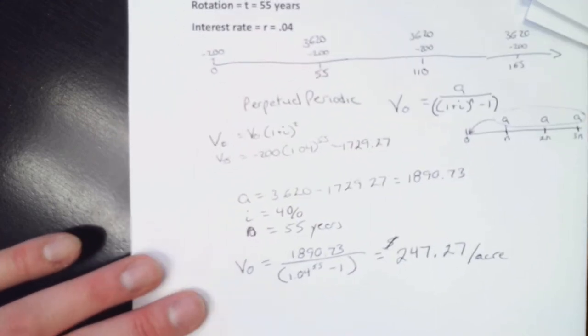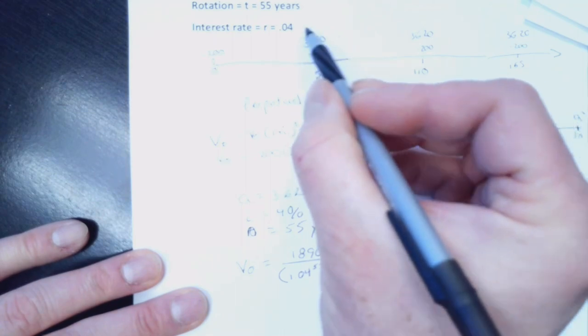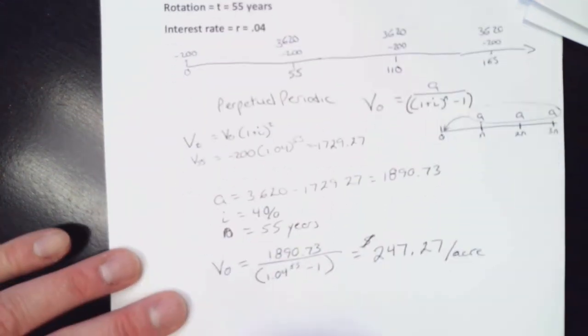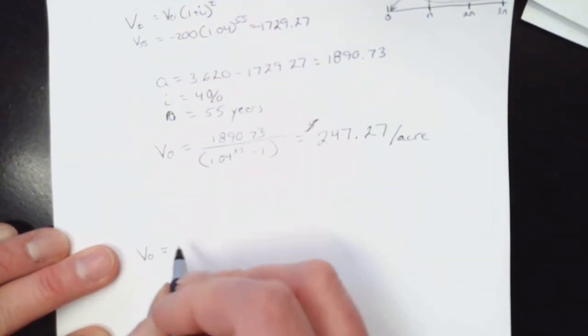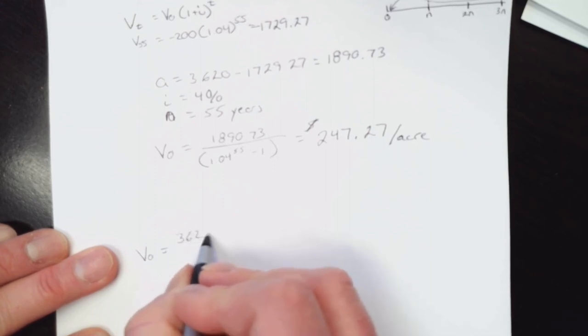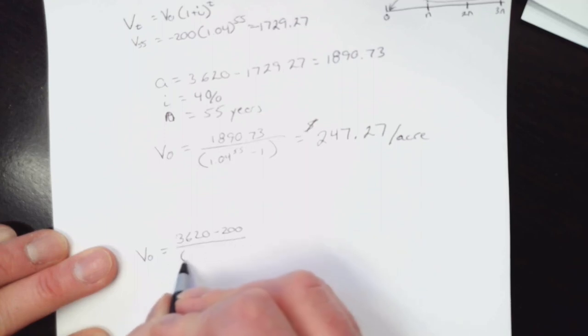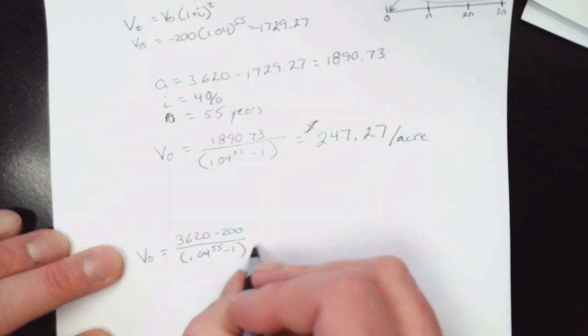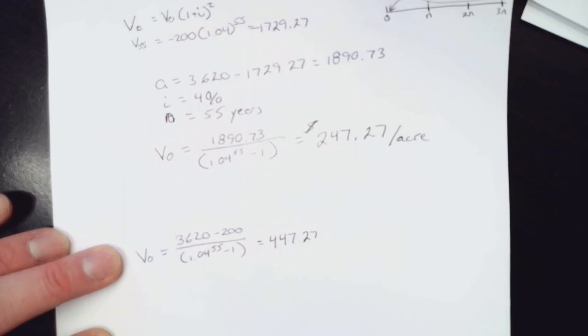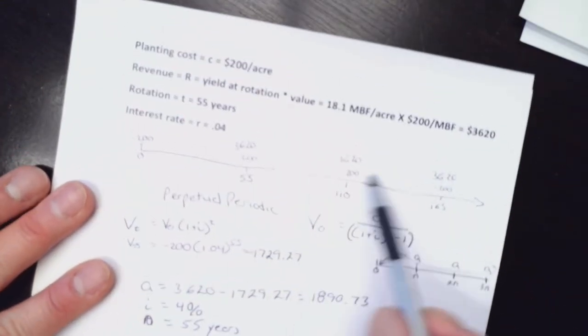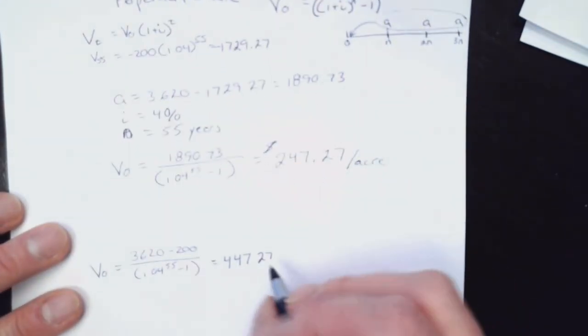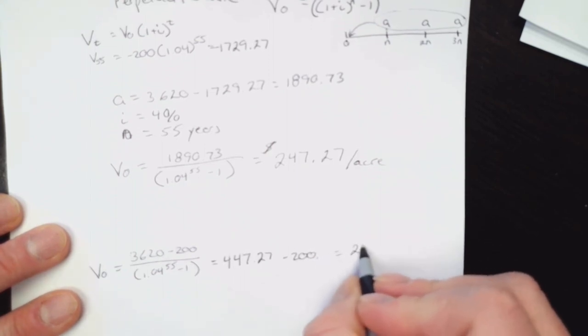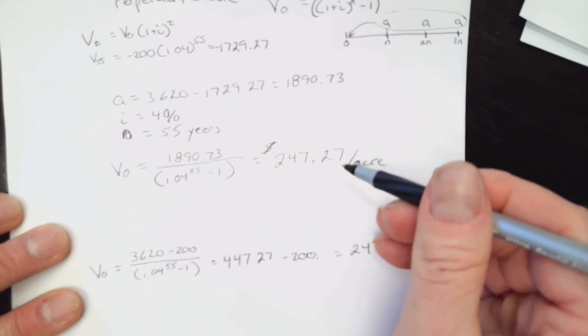The other thing we touched on really briefly here was what if you just took this number and looked at it as your A, right? This $3,620 there. So if I did that, I would have V0 equals $3,620 minus $200 over 1.04 to the 55 minus 1. If I did that, I would come up with $447.27, right? So that would be all of these values out here, but not this minus $200. So in order to get the same answer, I would have to take the minus $200 out. And that would give me $247.27, the exact same answer that we had here.